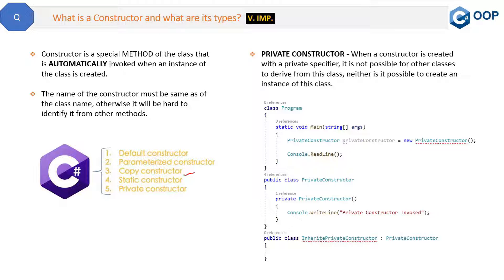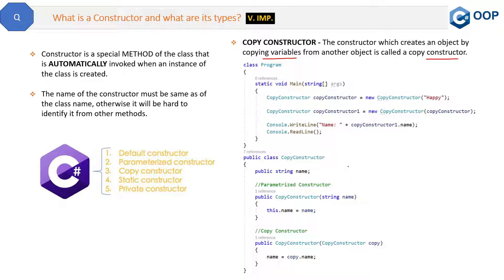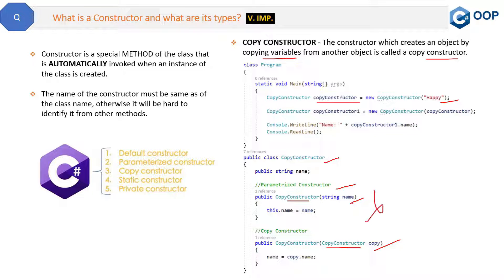Finally, the copy constructor — I have rarely used this constructor and have never been asked about it in interviews, but let's understand it. A constructor which creates an object by copying variables from another object is called a copy constructor. In the code, we have a class CopyConstructor with two constructors: one is a parameterized constructor that takes a string parameter name, and the other is the copy constructor. When we create an object passing a parameter, the first constructor is invoked.